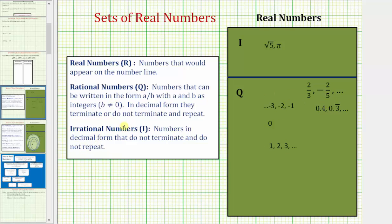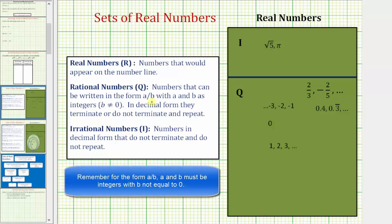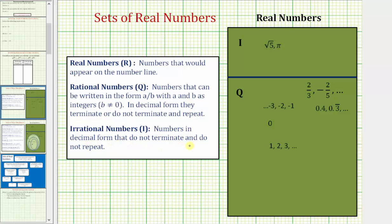Irrational numbers are real numbers that are not rational, meaning they cannot be written in the form of A divided by B. In decimal form, irrational numbers do not terminate and also do not repeat. Here are two examples of irrational numbers. The square root of five is irrational because it is not simplified perfectly, and in decimal form it would not terminate but would also not repeat. And then pi is a very famous irrational number. As a decimal, it does not terminate and does not repeat.